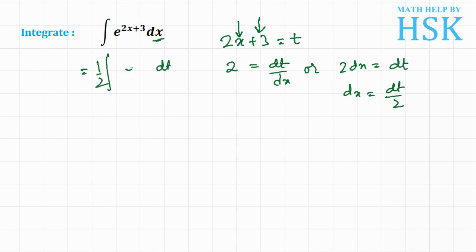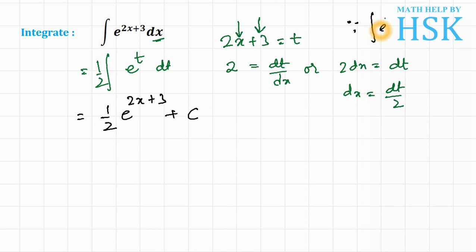For 2x plus 3 we place e to the power of t, so we get 1 by 2 times e to the power of 2x plus 3 plus c. This is the required answer, because the formula states that integration of e to the power of x is equal to e to the power of x plus c, and we have applied that formula.